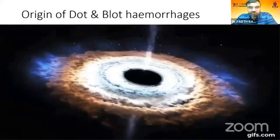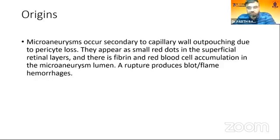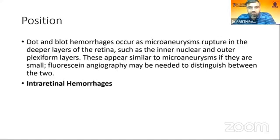Looking at the origin of these hemorrhages, they start with microaneurysms that occur secondary to capillary wall outpouching due to pericyte loss. They appear as small red dots in the superficial retinal layers, and there is fibrin and red blood cell accumulation in the microaneurysm lumen. Rupture produces blot and flame hemorrhages.